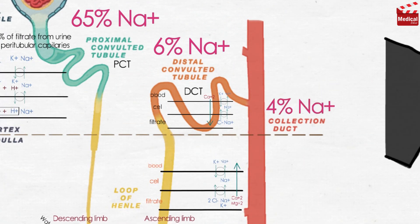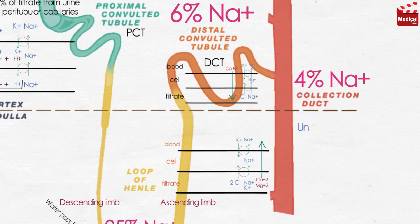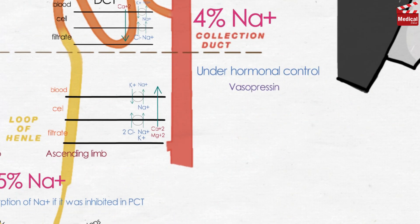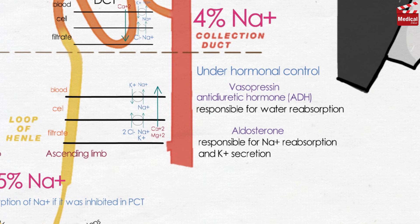Collecting tubules are responsible for reabsorption of 4% of sodium. Collecting ducts are under hormonal control: antidiuretic hormone (ADH) is responsible for water reabsorption, and aldosterone is responsible for sodium reabsorption and potassium secretion.